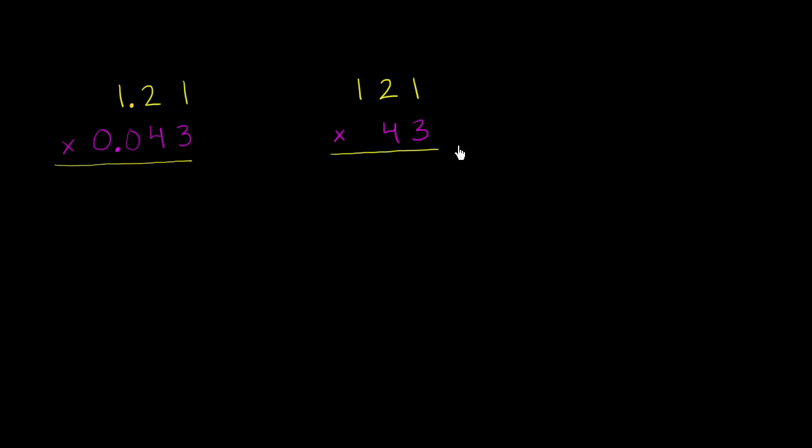So we can start with, so we're going to say 3 times 1 is 3, 3 times 2 is 6, 3 times 1 is 3. 3 times 121 is 363.